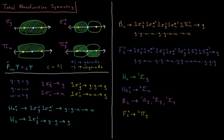For 1σg¹, that electron is g. For 1σu¹, that electron is u. For 1σg², that's g times g, which is g. For 1σu*², that's u times u, which is also g.